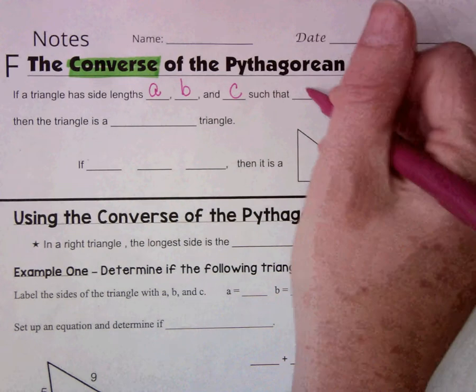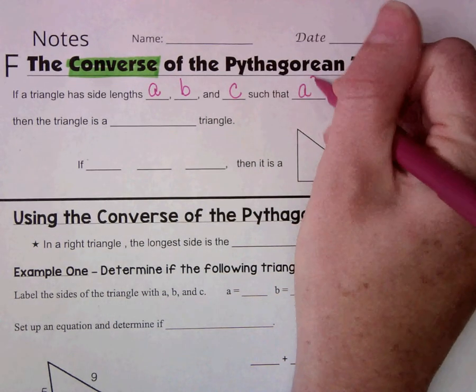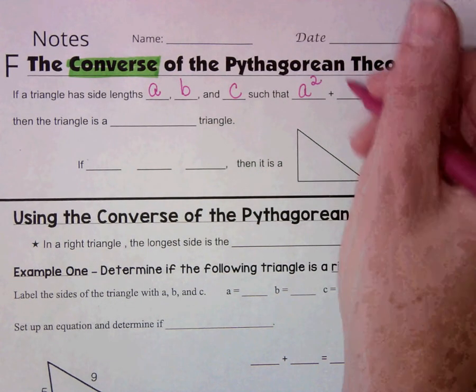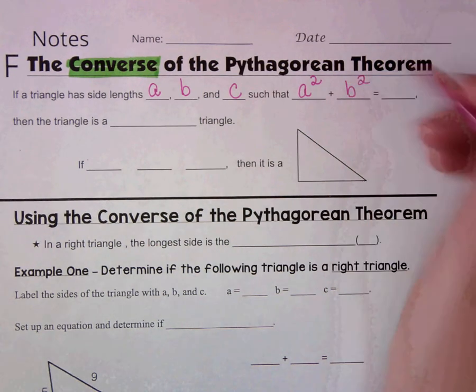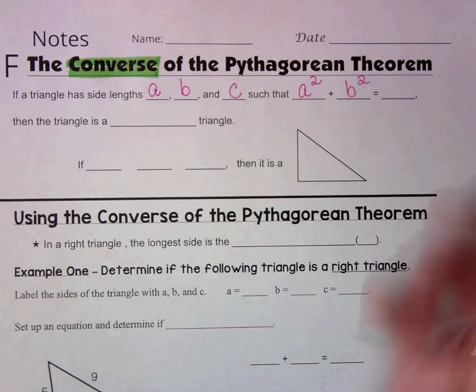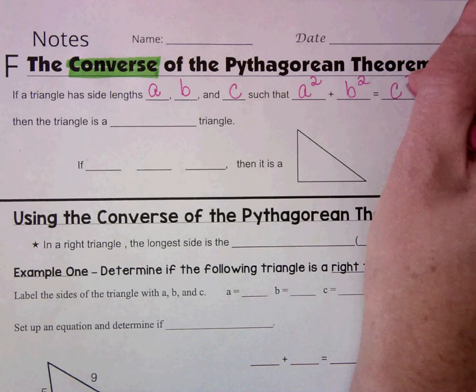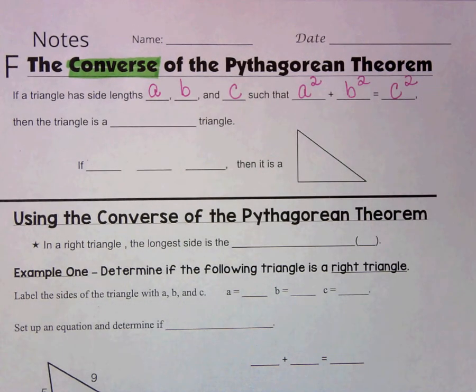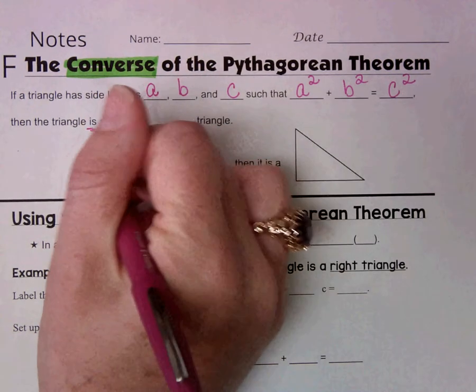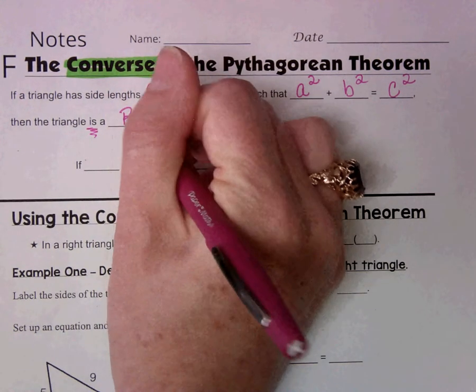Such that the area of the square of side A plus the area of the square of side B is equal to the area of the square of side C. Then the triangle is a right triangle.